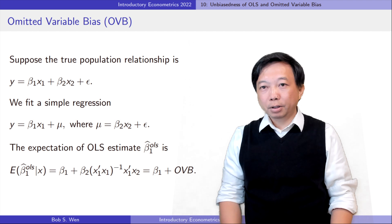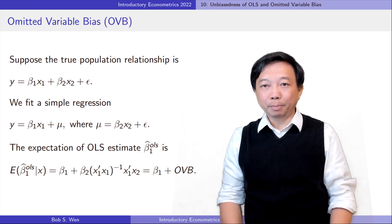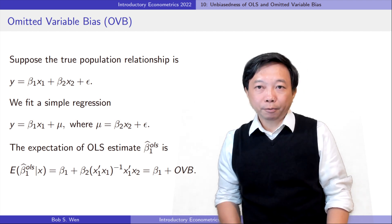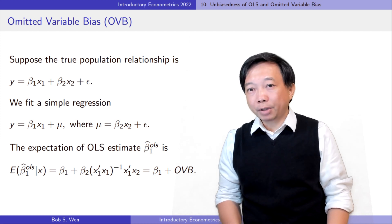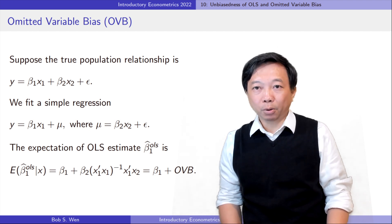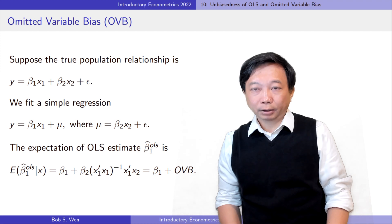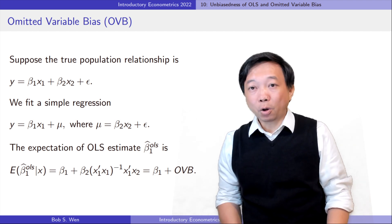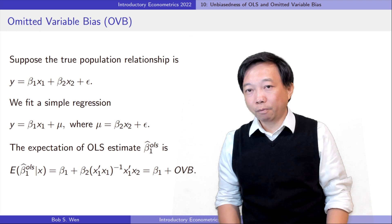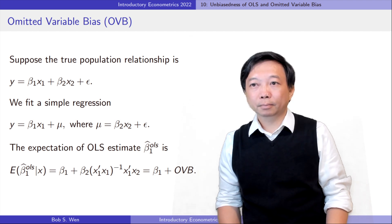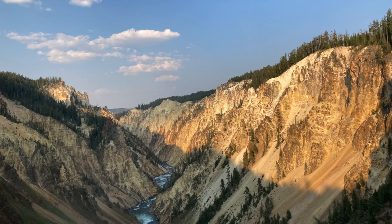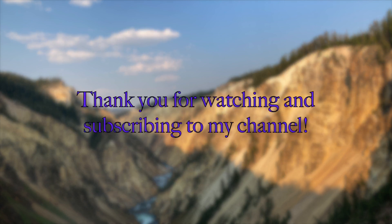Today we have learned the unbiasedness of the OLS estimates under the zero conditional mean assumption. When the assumption fails — that is, when the unobserved factors contained in the error term are correlated with the explanatory variable, or equivalently, the covariance between them is not zero — then the OLS estimates are no longer unbiased. They have the omitted variable bias. Thank you very much for watching this video. Thank you for subscribing to my YouTube channel. See you next time.